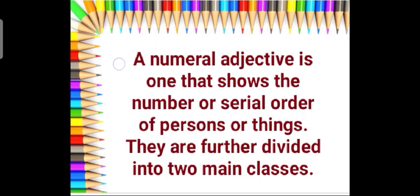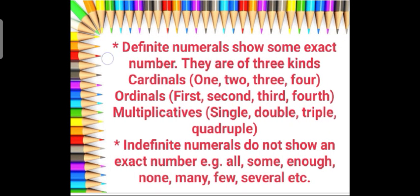Next is a numeral adjective. A numeral adjective is one that shows the number or serial order of persons or things. They are further divided into two main classes. The first one is definite numeral — it shows some exact number. There are three kinds: cardinal numbers — one, two, three, four; ordinal numbers — first, second, third, fourth. For example: I have one pencil, or he ate three bananas. We are giving the exact number of the things.